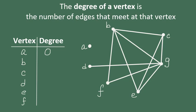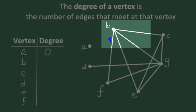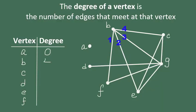Now let's look at vertex B. The number of edges that meet at vertex B would be 1, 2, 3, 4. So the degree of vertex B is 4.